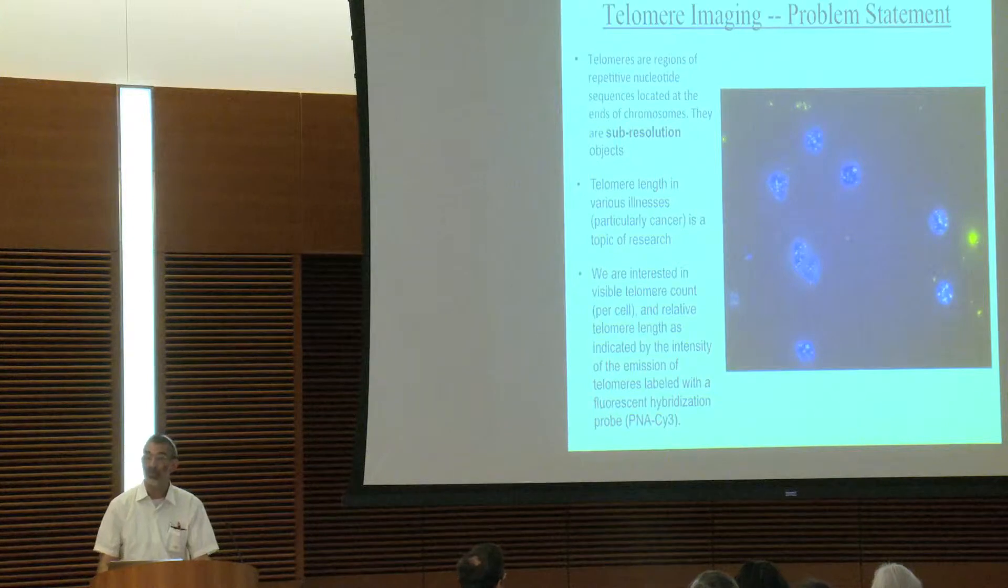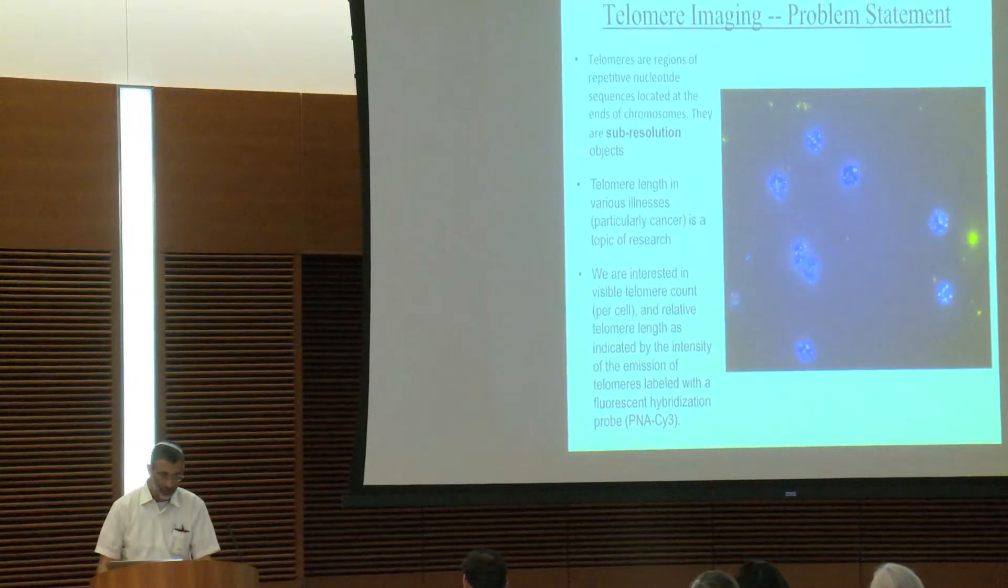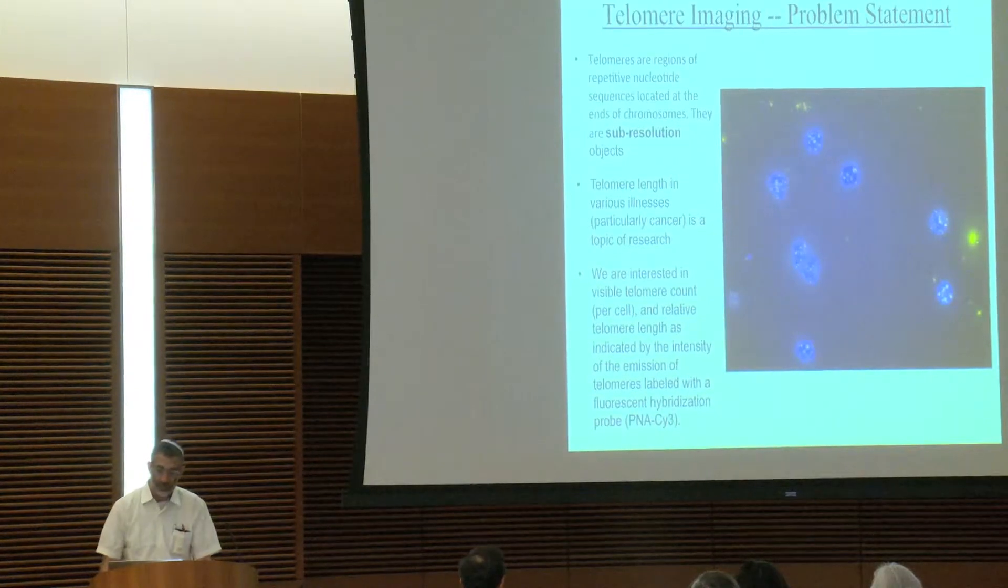and the blue is DAPI staining of the nucleus. These cells have actually had the cytoplasm stripped away. So that's what you're seeing over here, and we're supposed to then measure the strength and number of these telomeres.